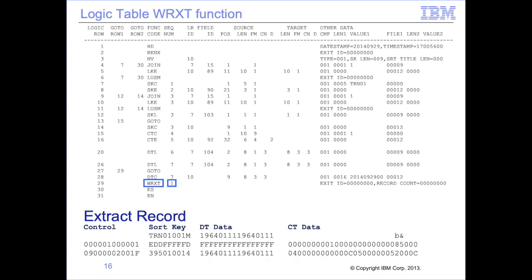Note that the WR function also changed when writing to a standard extract file. Instead of a WR function to copy the input record to the extract file or a WRDT function to write only the DT column values, the WRXT function writes the entire standard extract record to the extract file. The sequence number following this information contains the file number the extract record should be written to. In this example, the extract record contains the control area, sort data 9 bytes in length containing TRN01001M, two dates in the DT area, and two CT columns containing packed data. This record is written to extract file 1.